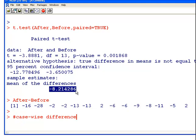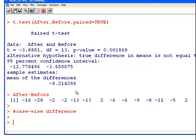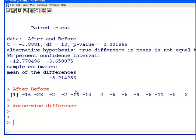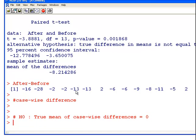So the null hypothesis, and I'm going to rewrite it here. Null hypothesis, or H0, true mean of case-wise differences equals zero, and in that case the medication would have no effect. It doesn't change the blood factor level.